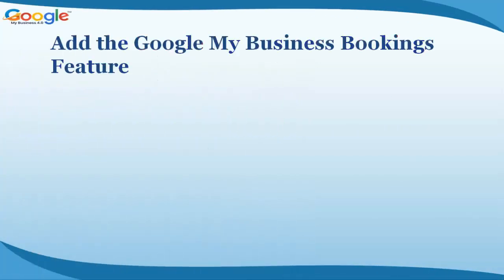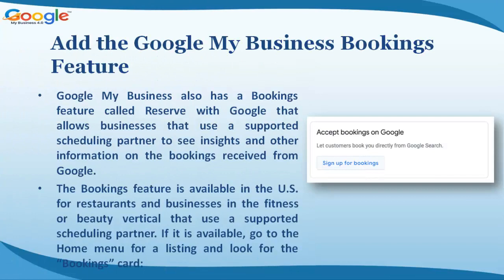Google My Business also has a bookings feature called Reserve with Google, which allows businesses that use a supported scheduling partner to see insights and other information on the bookings received from Google. The bookings feature is available in the US for restaurants and businesses in the fitness or beauty vertical that use a supported scheduling partner. If it is available, go to the Home menu for a listing and look for the Bookings card.